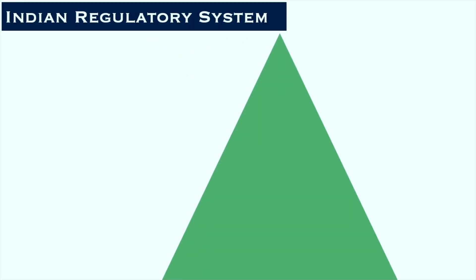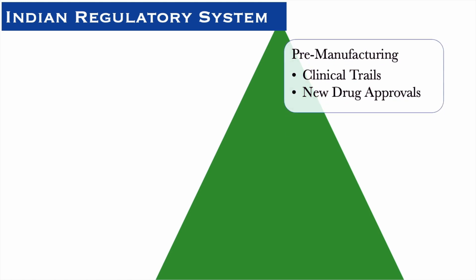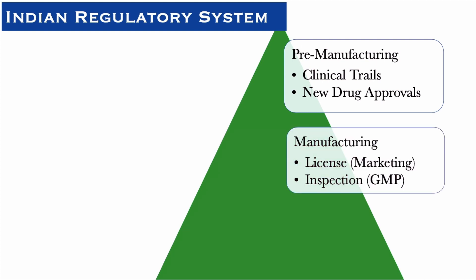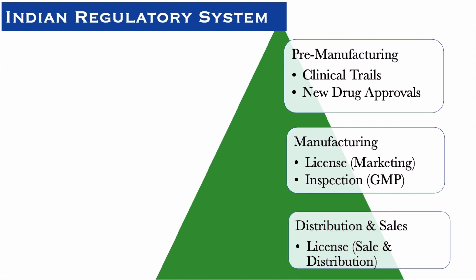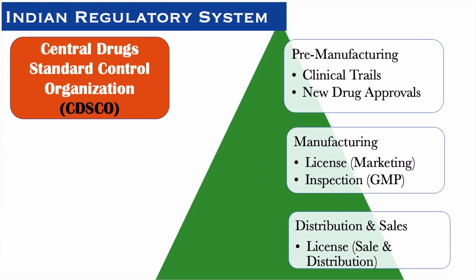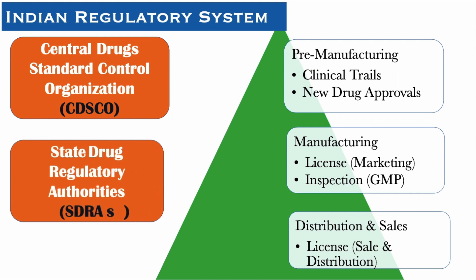The Indian regulatory system has three layers. When a drug is manufactured, it goes through the clinical trial stage, then the pre-manufacturing stage, which involves licensing and inspection, and then regulations under sales and distribution. Stage 1, the pre-manufacturing process, falls under the Central Drug Standard Control Organization — CDSCO. Stage 2, Manufacturing, and Stage 3, Distribution and Sales, are state subject matters. These processes are handled by State Drug Regulatory Authorities, called SDRAs.